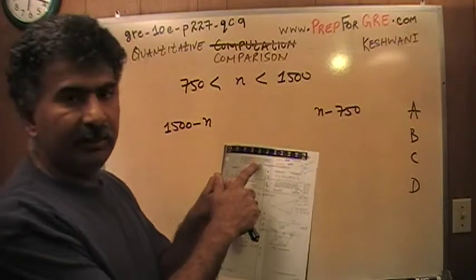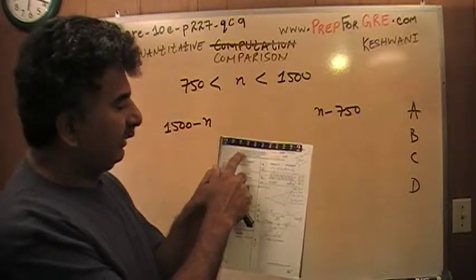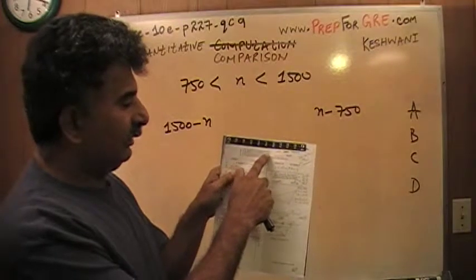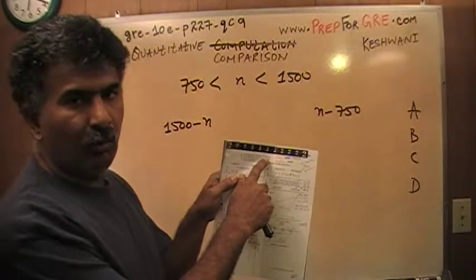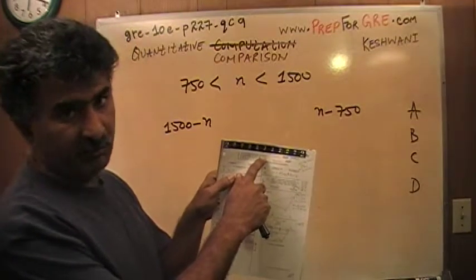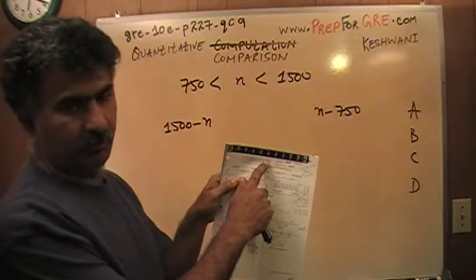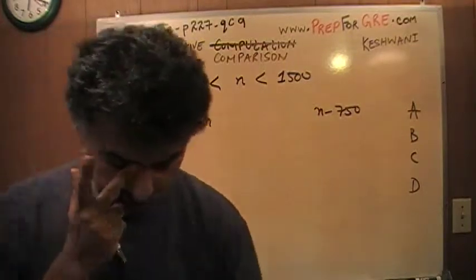I wish they would put always in the instructions where it says A if quantity in column A is, and then I wish they would insert the word always in capital letters. That would make life easier for a lot of people. But they don't. But that's what they mean. So let's see what we can do here.